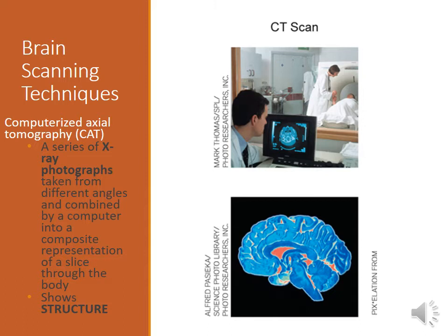The first one is a CAT scan, also referred to as a CT scan. This is the most inexpensive of scans because it uses basic x-ray technology. It will give you a map of the brain — it's essentially a single-shot x-ray of the brain, just like getting an x-ray of any other part of your body. It will literally just show you structure. We don't see the brain as it's active; we just see what it looks like.